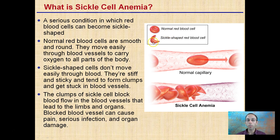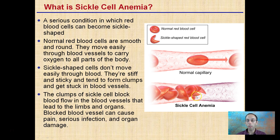Sickle cell shapes, if you have sickle cell anemia, don't move easily through the blood. They're stiff and sticky. They tend to form clumps and get stuck in blood vessels, which can block blood flow to limbs and organs, causing serious infection or organ damage. This is not a good condition to have, and the shape is also not as efficient at carrying oxygen.